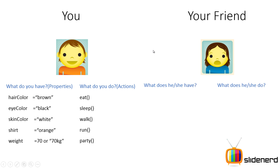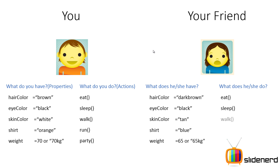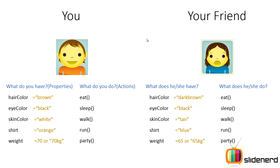Your friend also has certain properties and certain actions. The difference between you and your friend lies in the values of the different properties. The way you eat may be different from how your friend eats — for example, you may eat with your hands while your friend eats with a fork or spoon. Object oriented programming is all about considering the different possibilities and how they affect your program. So here I have shown you two different objects. If you take many different objects of type human being, you'll notice they all have similar properties but different values for each.